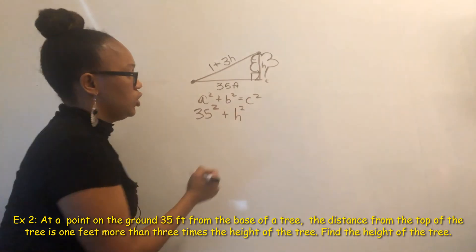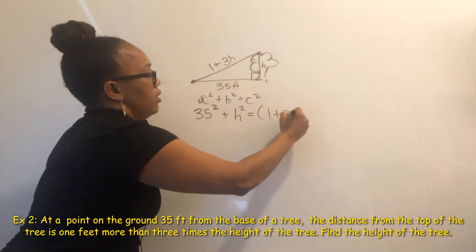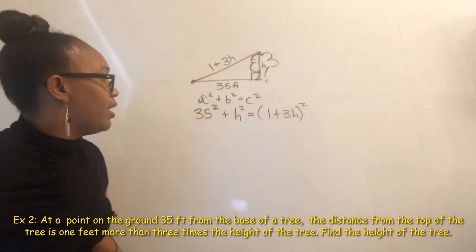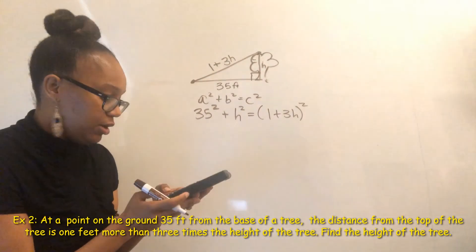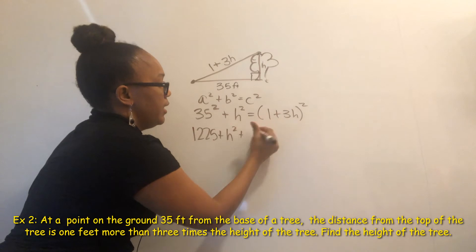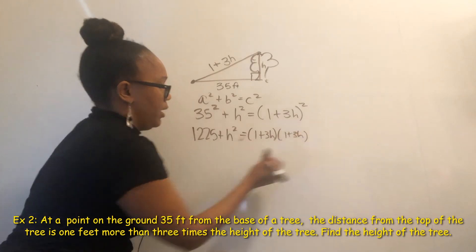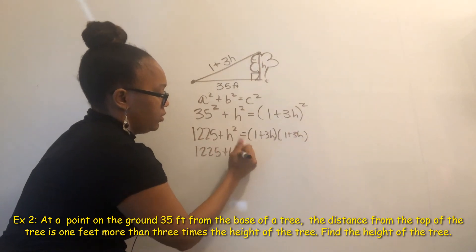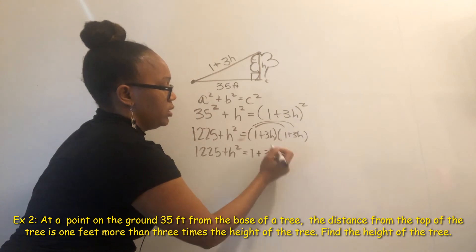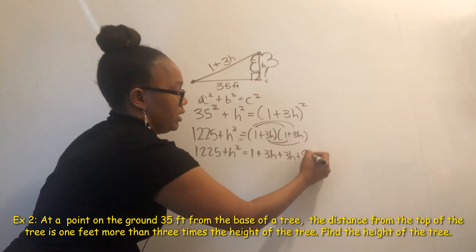So A is 35 and B is H, and C is one plus three H — the hypotenuse, the side opposite the right angle. So we get 35 squared plus H squared equals (one plus three H) squared. 35 times 35 is 1225, so we have 1225 plus H squared equals one plus three H all squared. Expanding: one times one is one, one times three H is three H, three H times one is three H, and three H times three H is nine H squared.